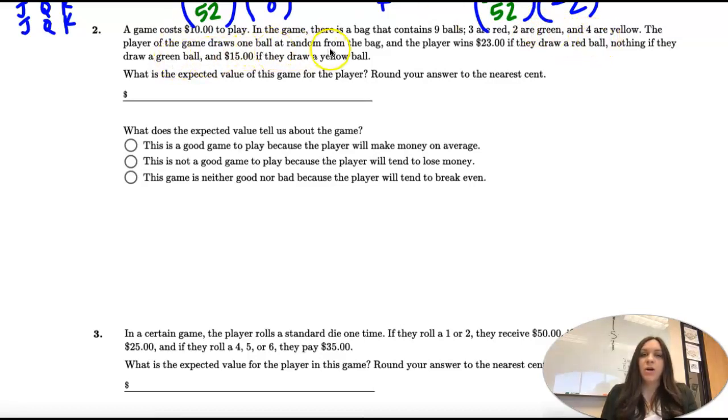If you draw one ball at a time: drawing a red one pays $23, drawing a green one pays nothing, and drawing a yellow one pays $15.